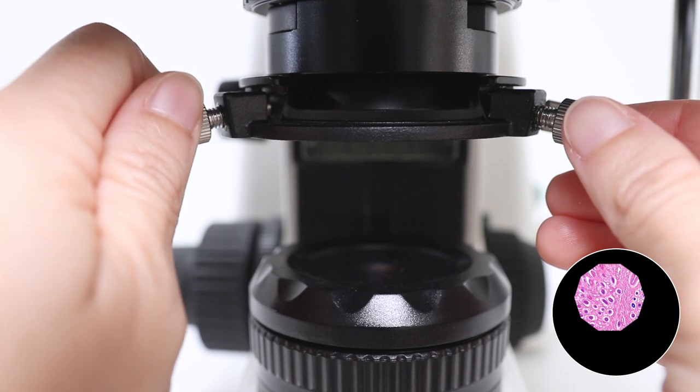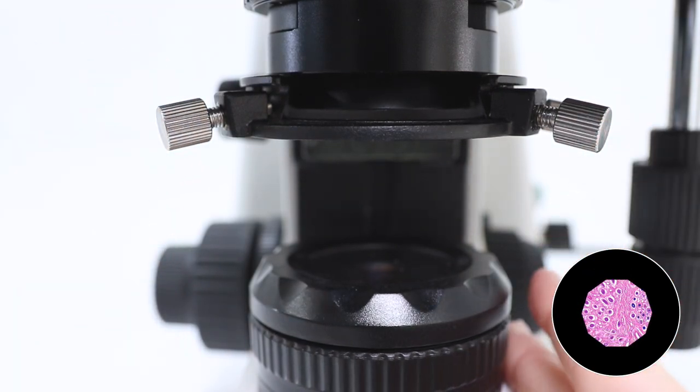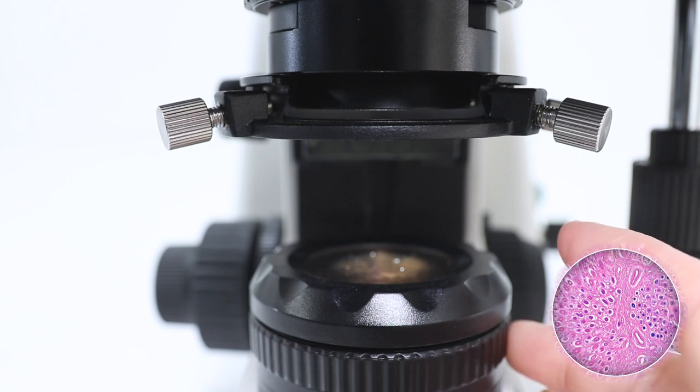Next, center the field diaphragm by using the two centering screws of the condenser. Finally, open the field diaphragm until it remains just outside of the field of view.